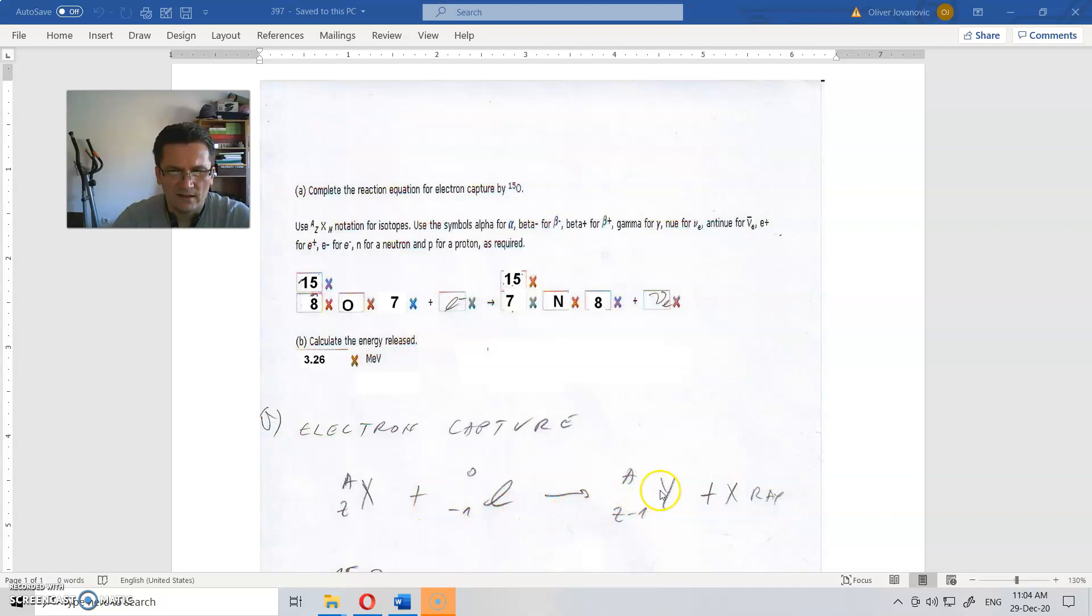And because of that, you will get, this is parent, this is offspring or element. It will have same number of sum of protons and neutrons, but it will be one less proton. How's that? Well, because one proton will turn into neutron with help of this electron. So this is the electron capture.